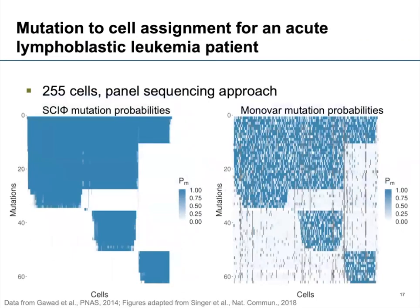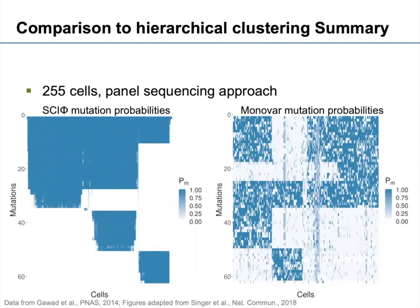We also tested it on a panel dataset with 255 cells, and we see basically the same picture — a much cleaner mutation-to-cell assignment compared to Monovar. But one could argue that we're just imposing our tree structure. So we also tried hierarchical clustering. With hierarchical clustering you do get quite nice clusters, but the noise doesn't go away. That gave us confidence that our approach is actually doing what it's supposed to do.